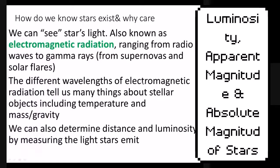We know that stars exist based on their electromagnetic radiation. It used to be the only evidence we have for stars. Now we have gravitational waves, but for the most part, we still depend on electromagnetic radiation. The easiest one to think about is light. We can see the light from stars. We also have satellites that can see using gamma rays, and satellites that can view in ultraviolet like the Hubble Space Telescope, so we have technology that can see other wavelengths on the electromagnetic spectrum.